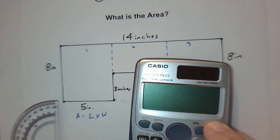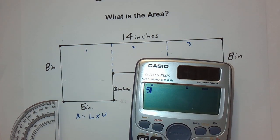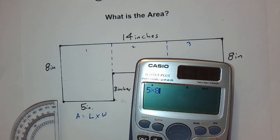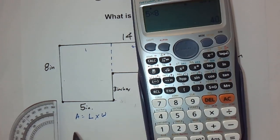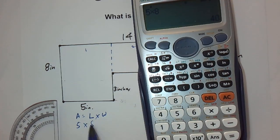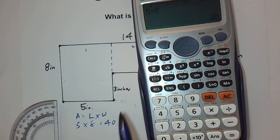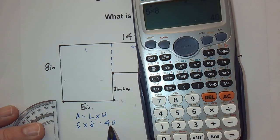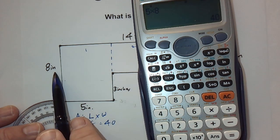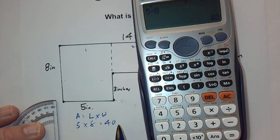So, if we put that into our calculator, we just do five times eight, and that's going to give us 40. So, five times eight is equal to 40, and we have to have units. This is inches, and this is inches.